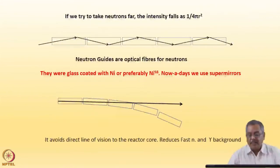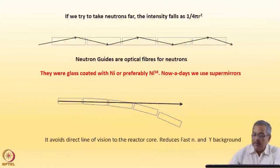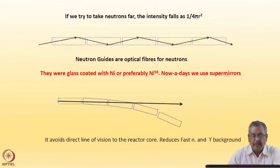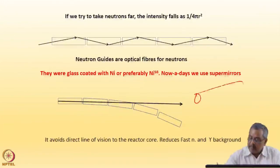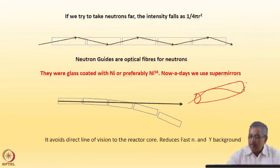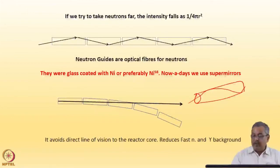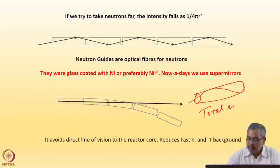Consider how light travels in an optical fiber — a cylindrical structure. Once light enters, it follows the optical fiber whether you bend it or keep it straight, through total internal reflection.